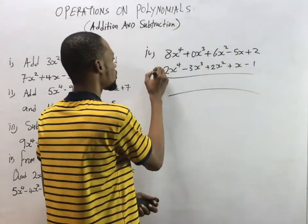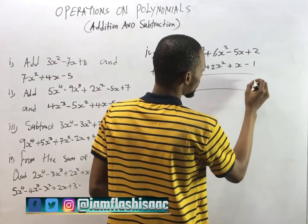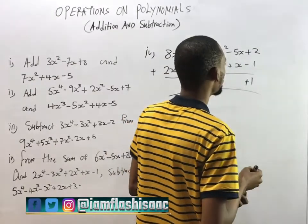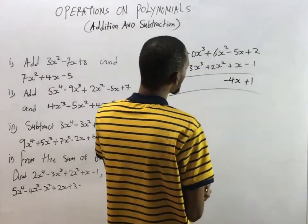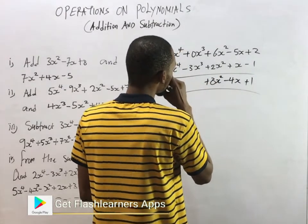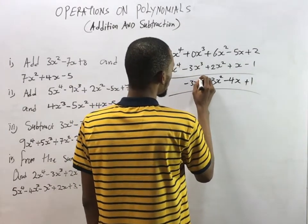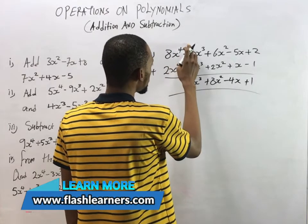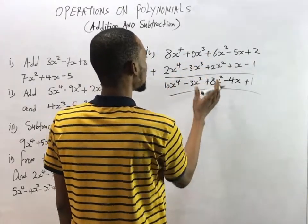Now we add the two polynomials. Constants: 2 + (-1) = 1. For s terms: -5s + s = -4s. For s²: 6s² + 2s² = 8s². For s³: 0s³ + (-3s³) = -3s³. For s⁴: s⁴ + 2s⁴ = 10s⁴. So the sum is 10s⁴ - 3s³ + 8s² - 4s + 1.